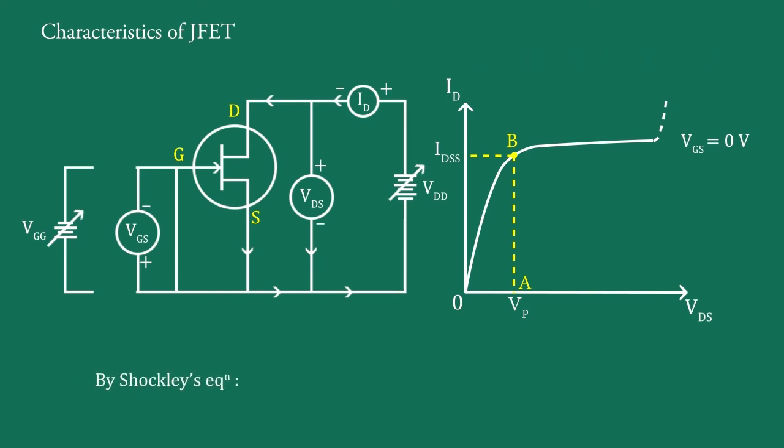By Shockley's equation, drain current is written as ID equals IDSS times (1 minus VGS upon Vp) whole raised to 2. A FET is said to be in the channel ohmic region corresponding to the curve OB.